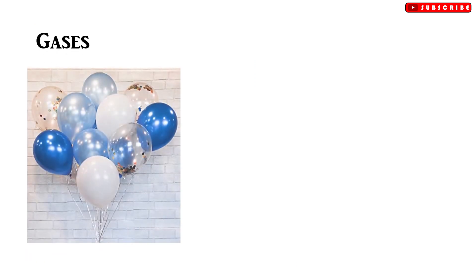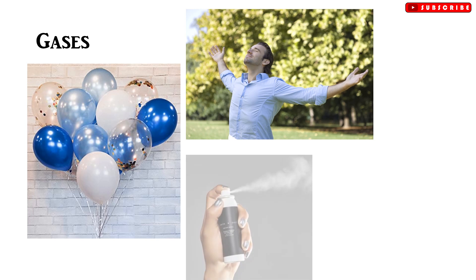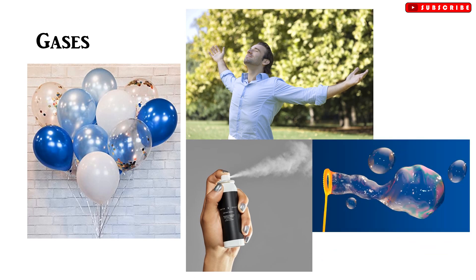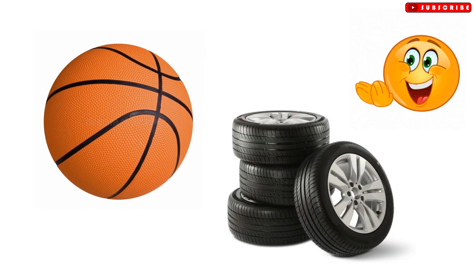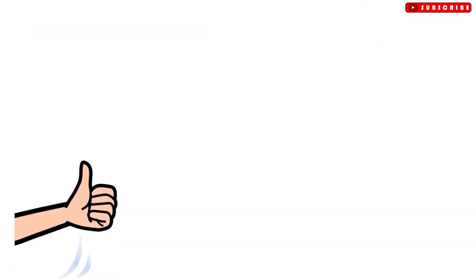Gases have no fixed shape and no fixed volume. Gases are easy to compress. They spread out to fill their containers. Gases are used when we need something that is able to return to its original state after being pressed or hit. Basketballs and tires are examples of how air is used to fill them up to make them bounce back into shape even after they are pressed or hit.